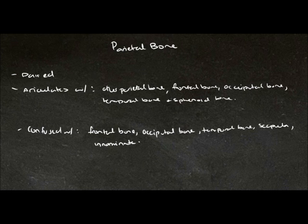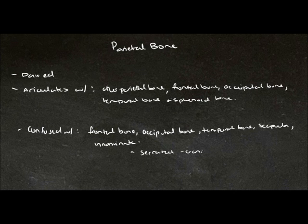You can use certain features of the bone to tell whether it will be a cranial bone or a post-cranial bone, and these are the edges. If they're serrated, which means jagged, then it's most likely a cranial bone. You can check the specific features of the bone if they're present, and this will also help you sort out the confusion. We'll go over those specific features of the parietal bone now.